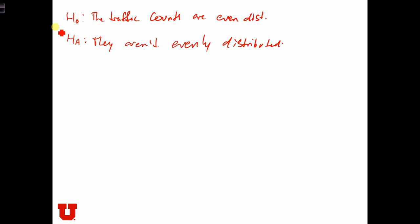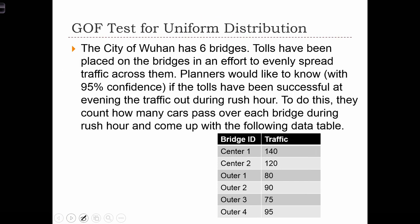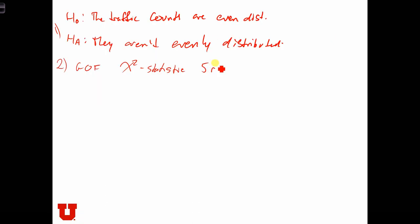So that was step one. Step two is we're going to use a goodness of fit test, which is a chi-squared statistic. And we have k minus one degrees of freedom. So in this case, we've got k equal to six. There's six groups. So we've got five degrees of freedom.